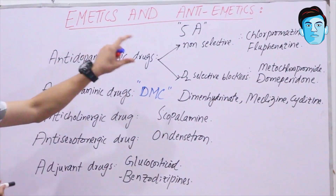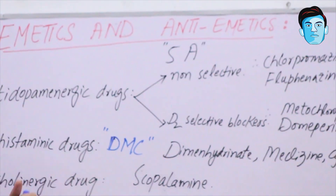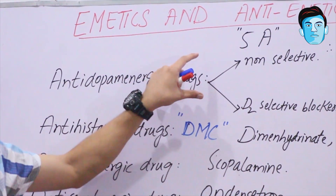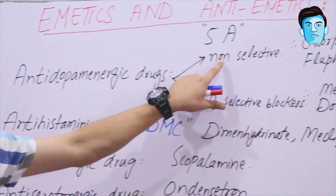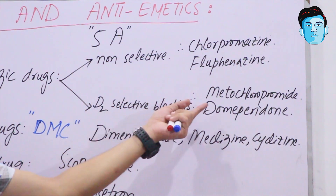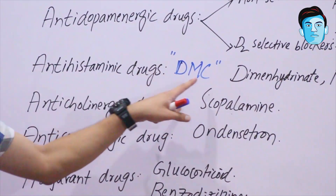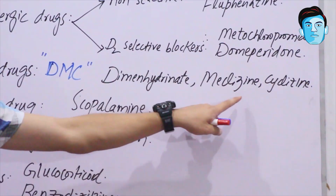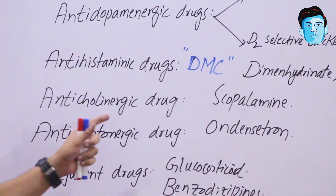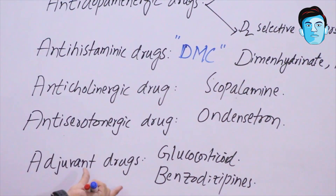To recap the five A's for anti-emetics: Anti-dopaminergic drugs — non-selective (chlorpromazine, fluphenazine) and D2-selective blockers (metoclopramide, domperidone); Antihistaminic drugs — dimenhydrinate, meclizine, cyclizine; Anticholinergic drugs — scopolamine; Anti-serotonergic drugs — ondansetron; and Adjuvant drugs — glucocorticoids and benzodiazepines.